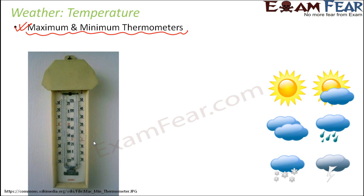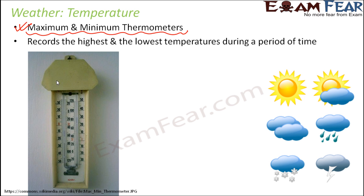The maximum and minimum thermometer has two scales instead of one. Unlike the normal thermometer used for body temperature, which has just one scale, this thermometer has two different scales on a U-shaped glass tube. Its speciality is that it records the highest and the lowest temperature during a period of time — for example, the maximum and minimum temperature on a particular day.